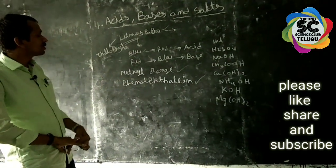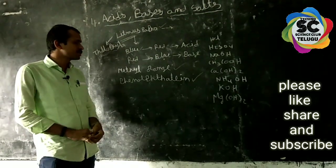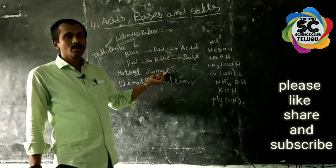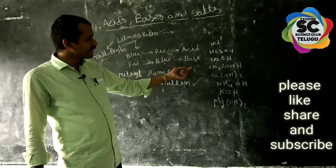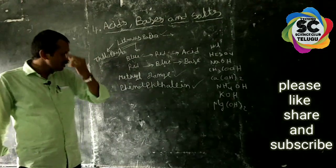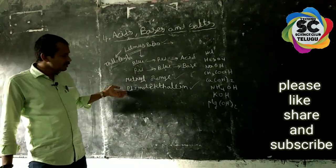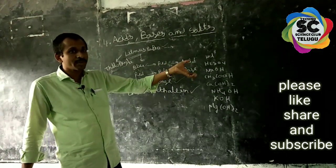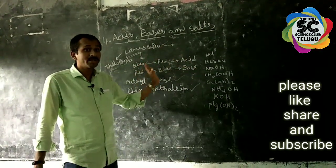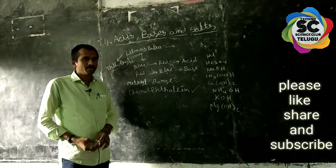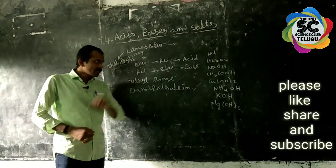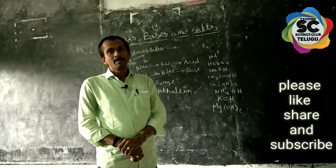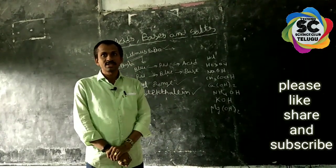These indicators are used with litmus paper, but also methyl orange — methyl orange in acid gives a pink or red color. Phenolphthalein shows one color in acid and another in base. In 7th class we covered natural indicators, chemical indicators, and unnatural indicators.